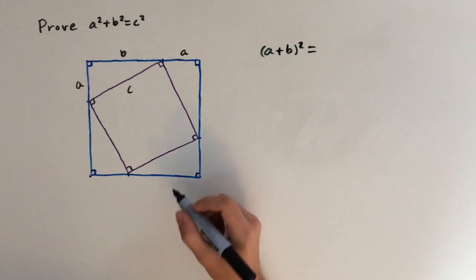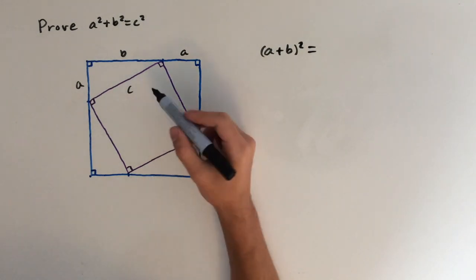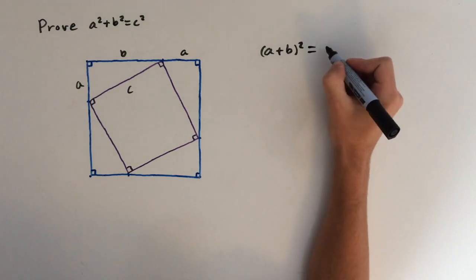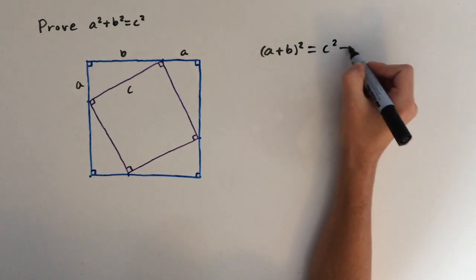So this is going to equal, now the area of the purple square is going to be C times C, because all of these lengths are just C. So this will be C squared plus,